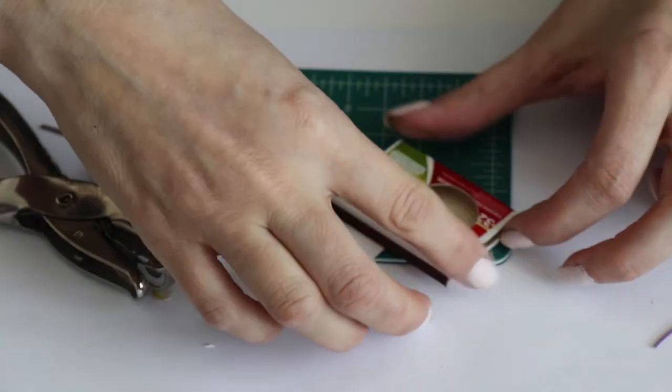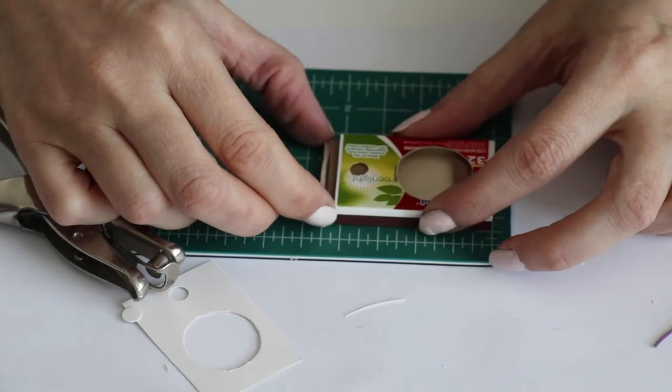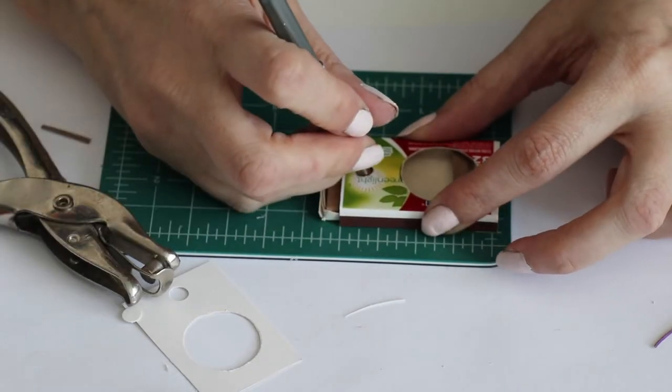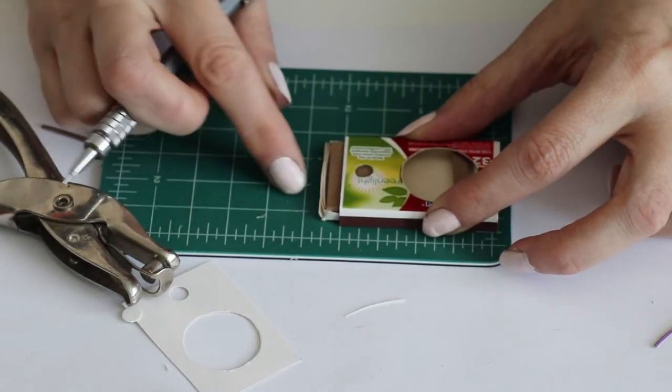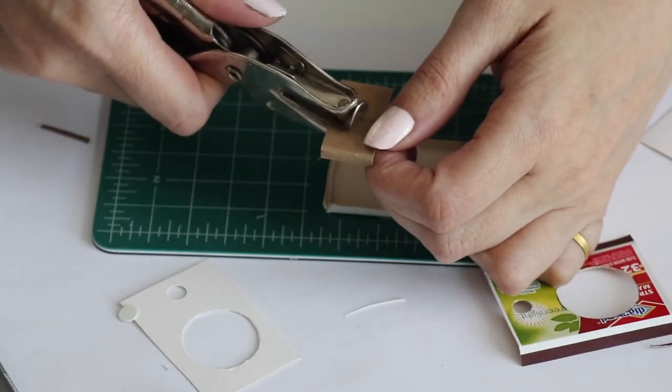Put the top of the box on the tray. Slide the top up a quarter inch and mark the hole. Punch the hole out.